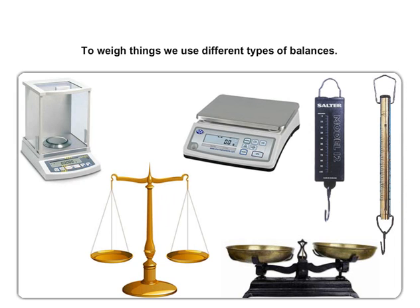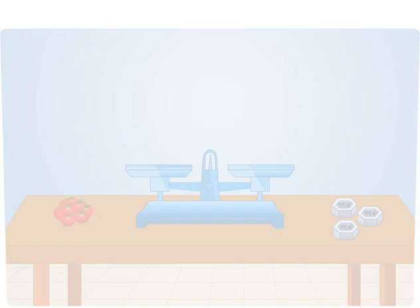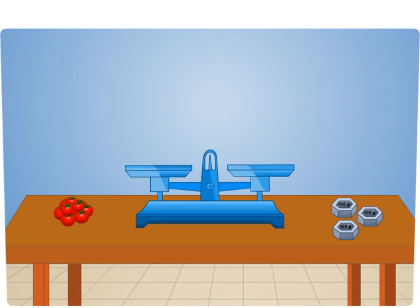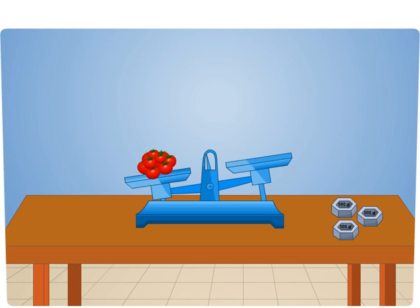To weigh things, we use different types of balances. To weigh 1 kilogram of tomatoes, we put tomatoes in one pan of the balance and in the other of the balance, we put 2 weights of 500 grams.